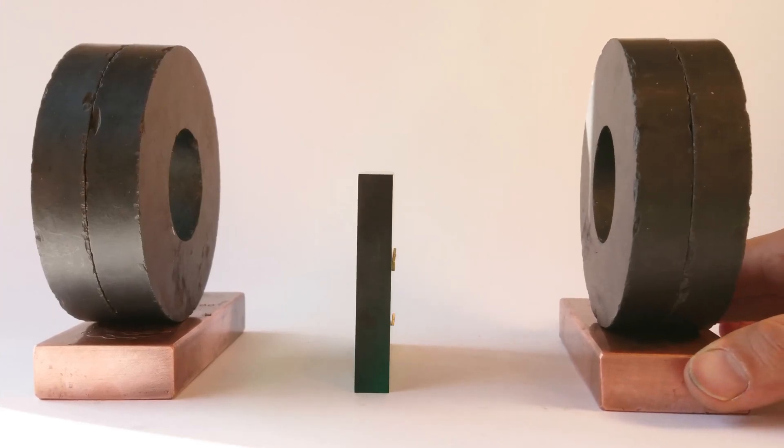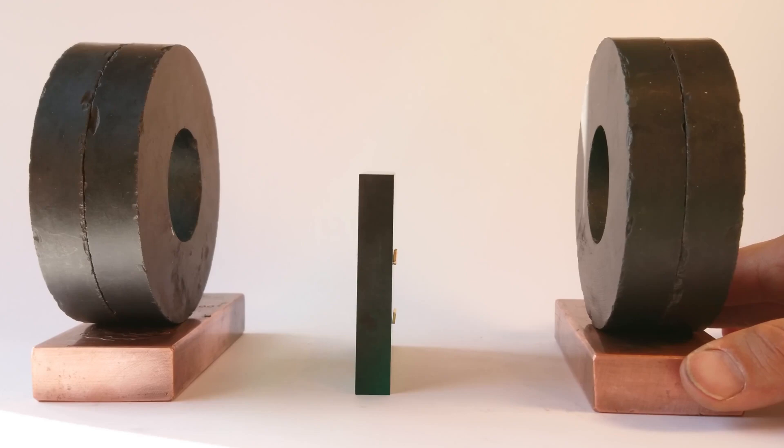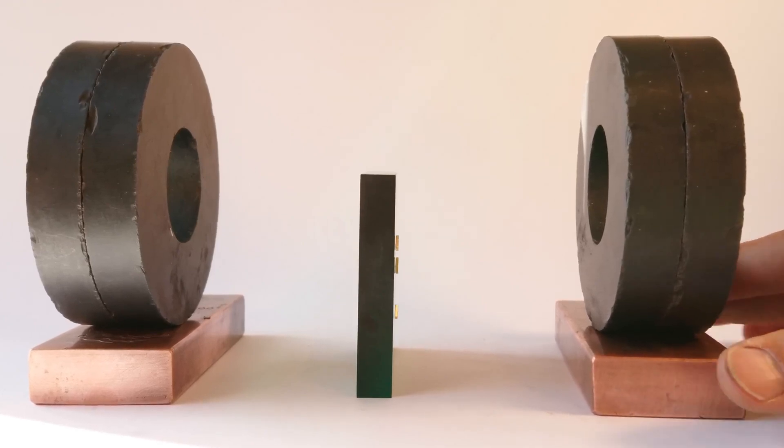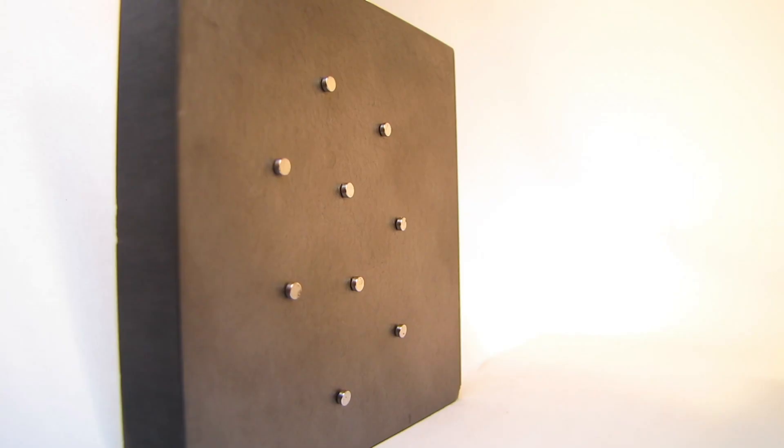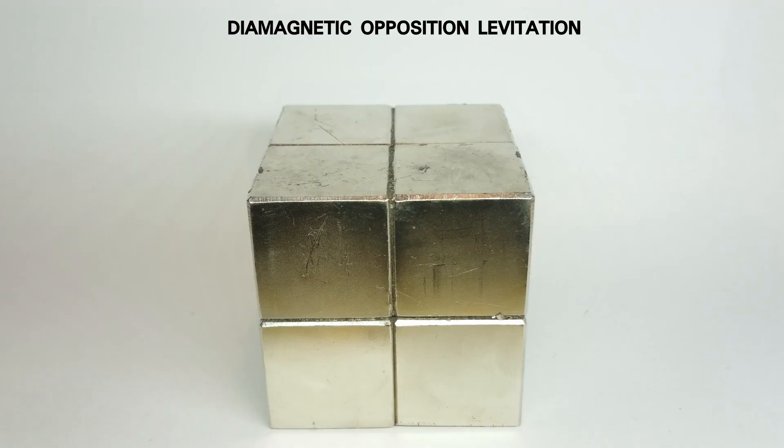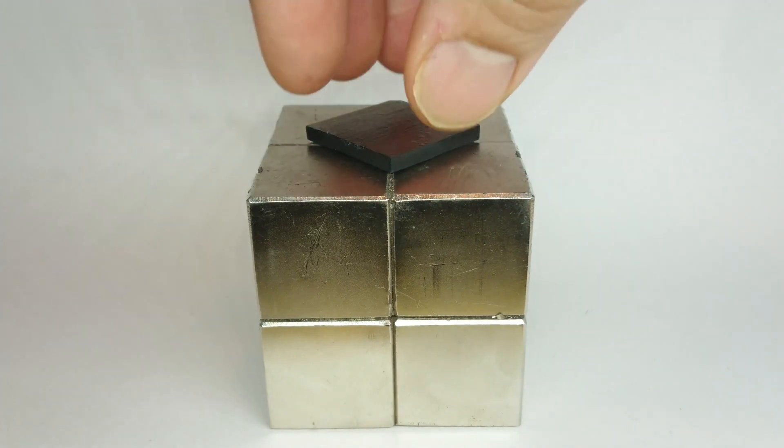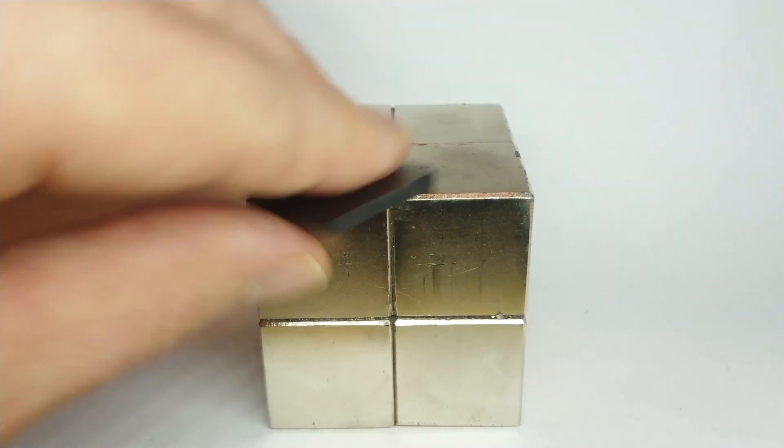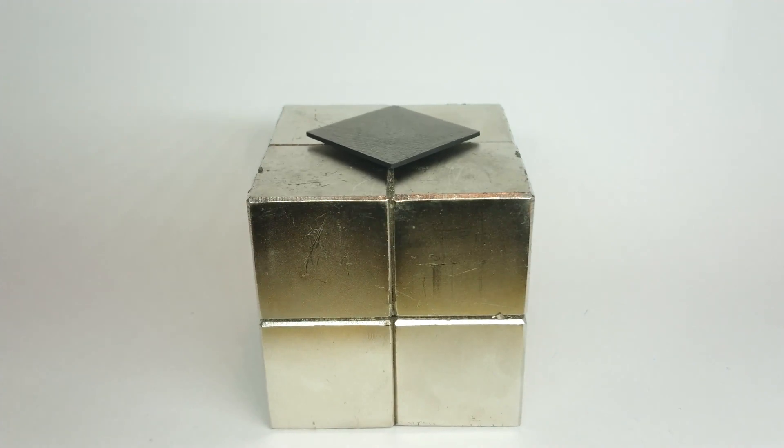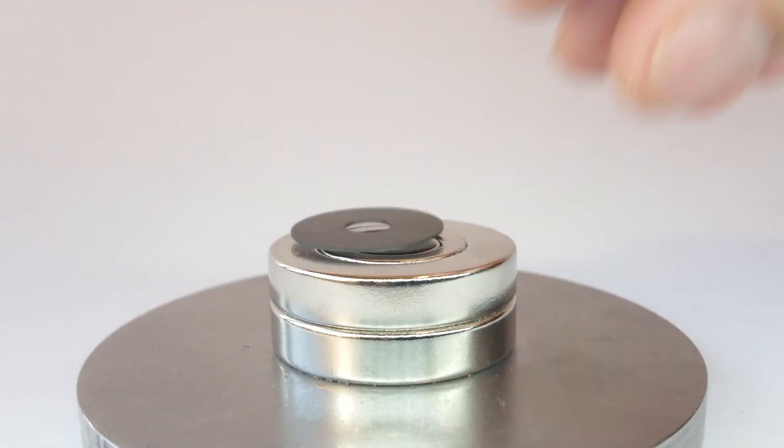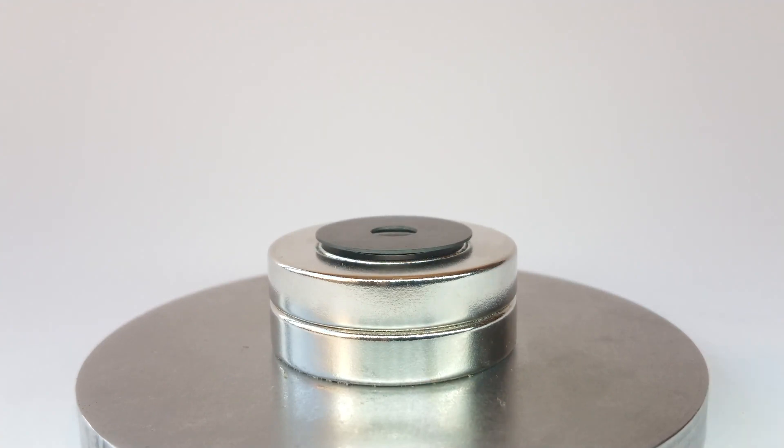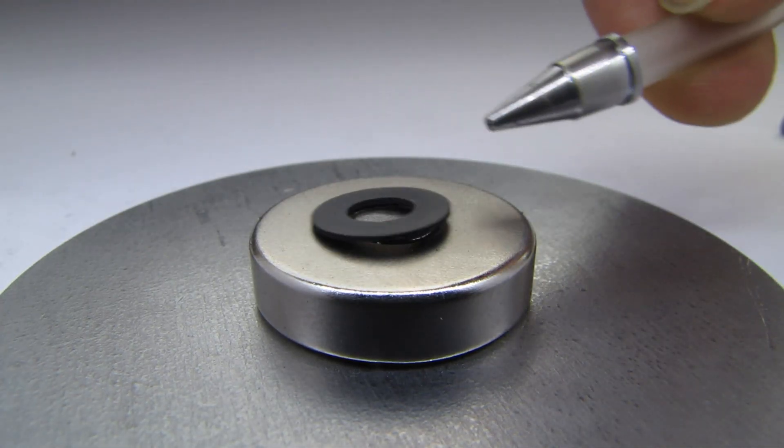Pyrolytic graphite is the most diamagnetic substance known to man. A thin enough piece of pyrolytic graphite will levitate over a magnetic array. The diamagnetic repulsion is greater than the weight of the graphite. The amount of lift is proportional to the density of the magnetic flux around the graphite.